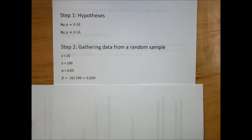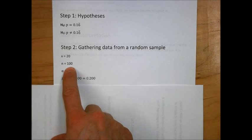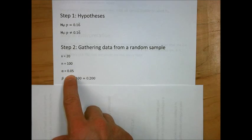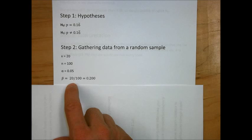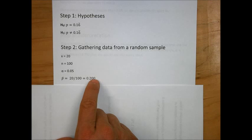Again, in step two, we gather data from the random sample, and in this case we've already sampled a die 100 times. We know that 20 times the die came up with a six, we rolled a total of 100 rolls, we're testing at the 5% level of significance, and our sample proportion is 20 out of 100, or 20% sixes.